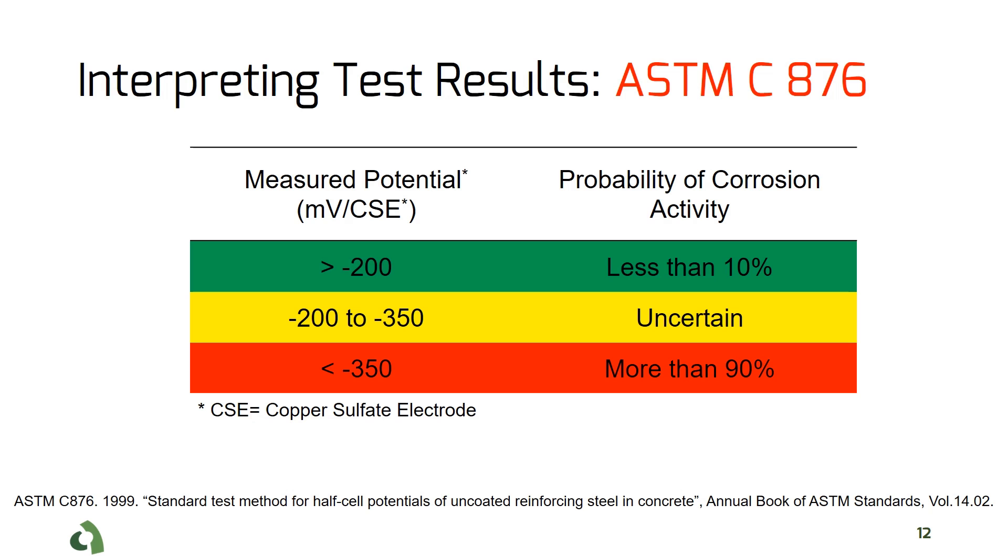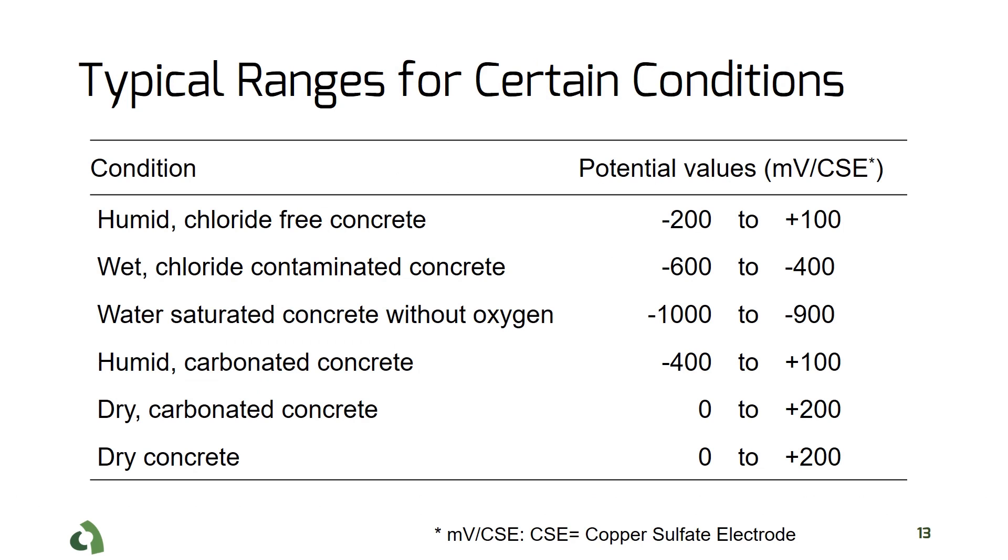Half-cell readings are affected by many influencing factors, such as concrete moisture content and the degree of carbonation. One can expect to have more positive values as concrete becomes dry. In contrast, moist concrete can show more negative values.